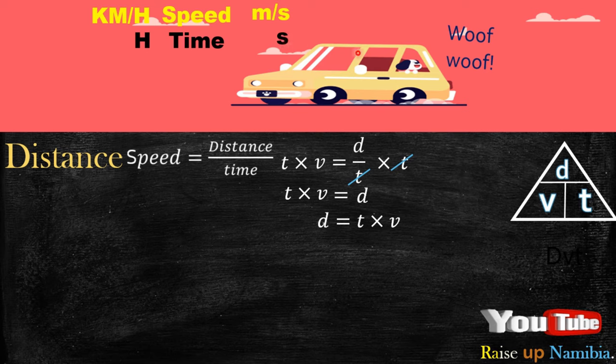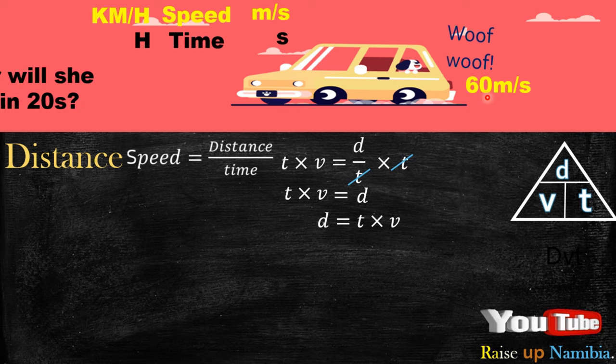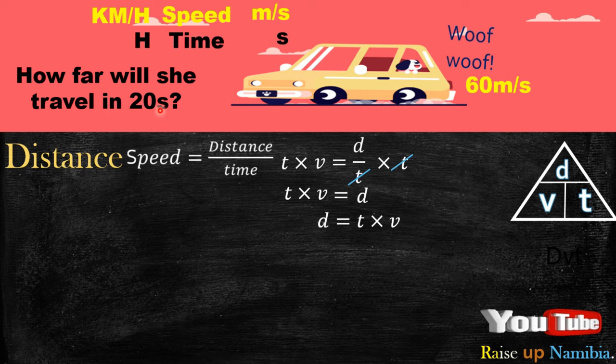Now, Miss van der Merwe here, let's say she traveled at a speed of 60 meters per second. How far will she travel in 20 seconds if she was traveling at 60 meters per second? Now the first thing you need to check always, always check your speed. What's the unit of the speed? It's meters per second. So now you check your time. Is your time in seconds, the time you are given here? Yes.